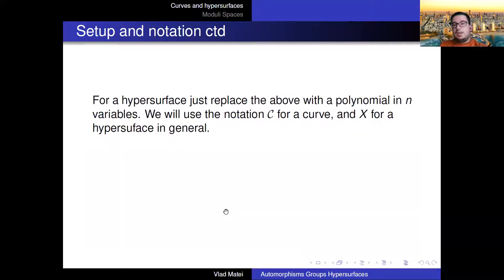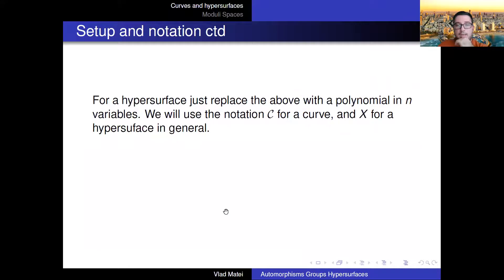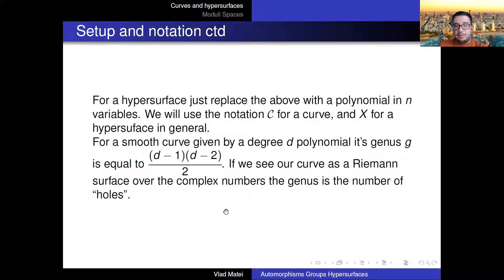Let me fix some notation. A hypersurface is the same definition but with more variables, and the same smoothness conditions apply. I'll use C for a curve and X for a hypersurface in general. The genus will sometimes appear, but for smooth curves you can think of it in terms of degree — it equals the number of holes in the corresponding Riemann surface.